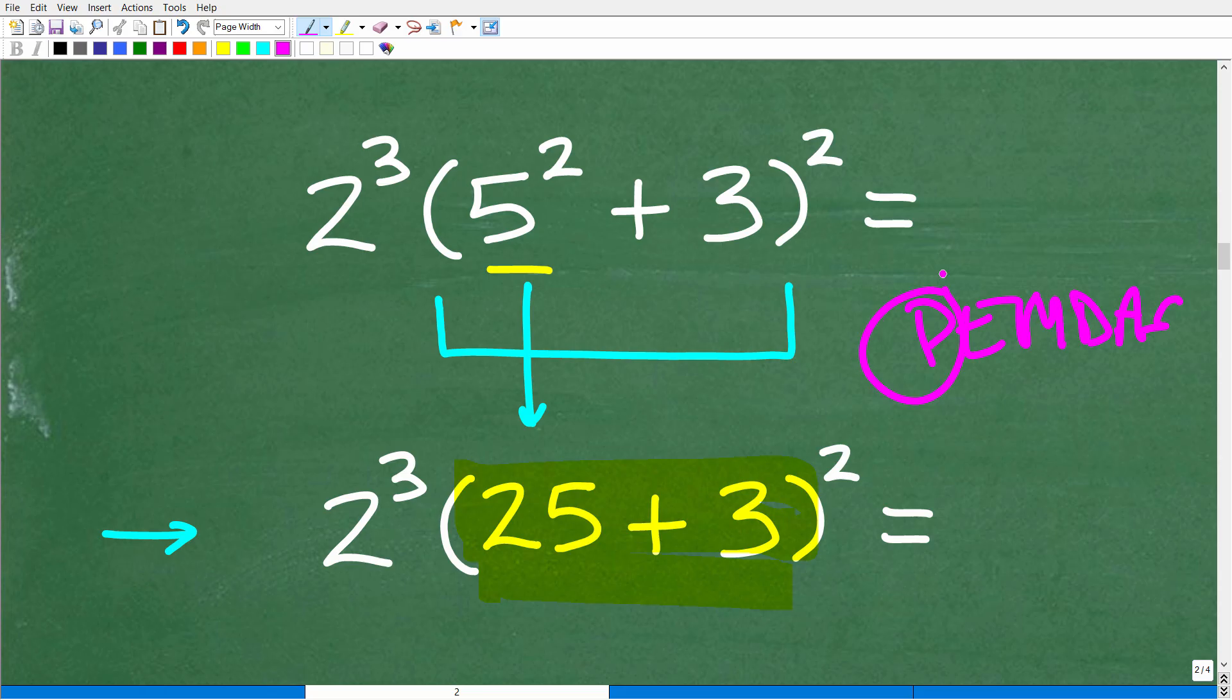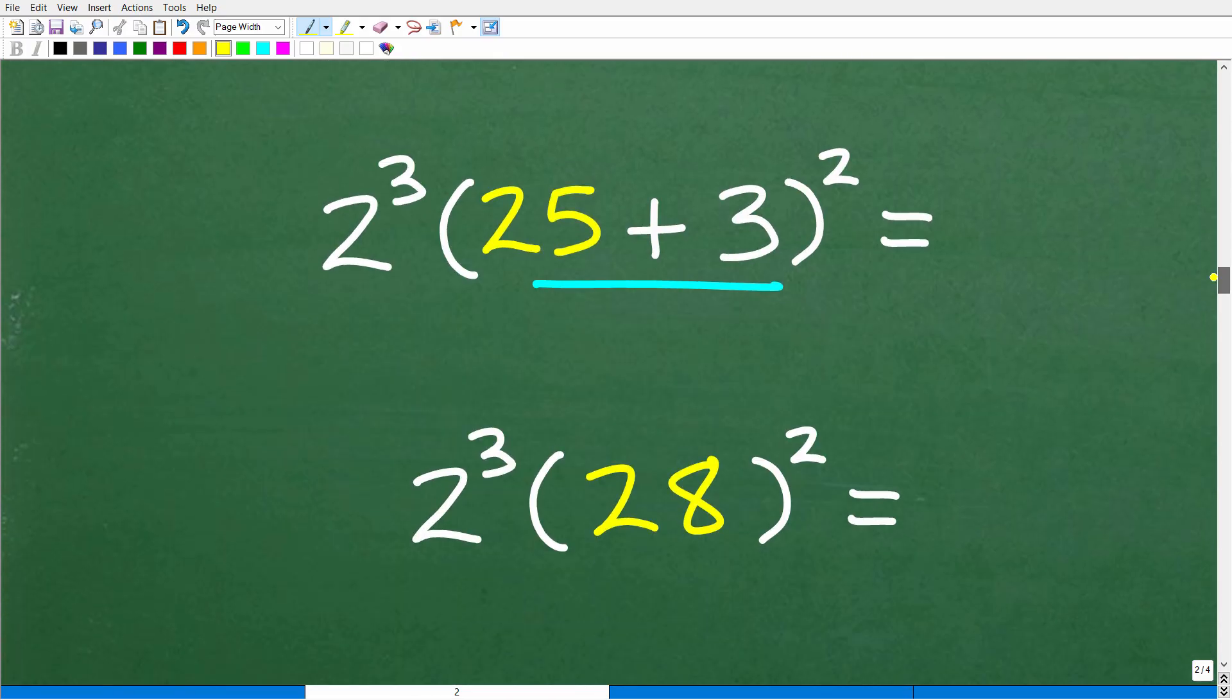We're not done with the P part until we're done with everything in the parentheses. So we need to continue to march forward. So 25 plus 3 is what? Well, 25 plus 3 is 28. Now we are done with the parentheses part of the problem.